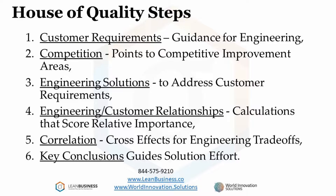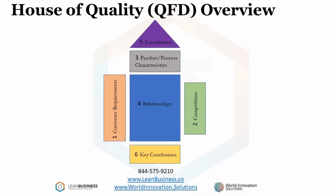I will go through the steps quickly and then later in more detail. First, the inputs include the customer, competition, and engineering solutions. The next step is to score relative importance between the customer needs and the engineering solutions. Next, some engineering solutions will contribute to or take from other engineering solutions, and this is determined next. Finally, the key conclusions come out of this exercise that help focus project direction. This is just a graphical look at the process that I will follow for the rest of the presentation.